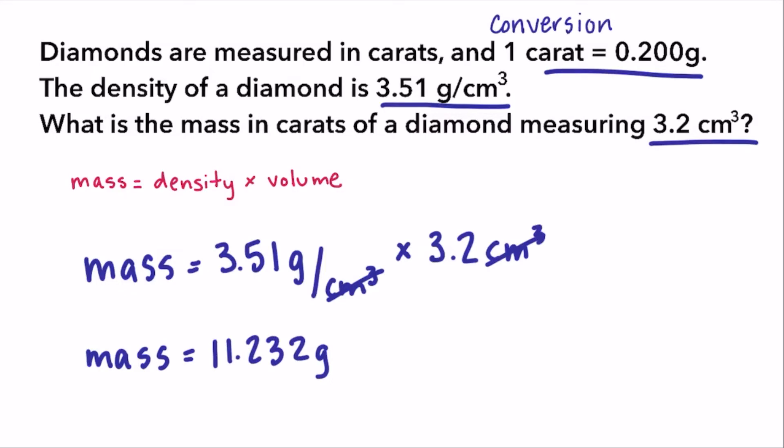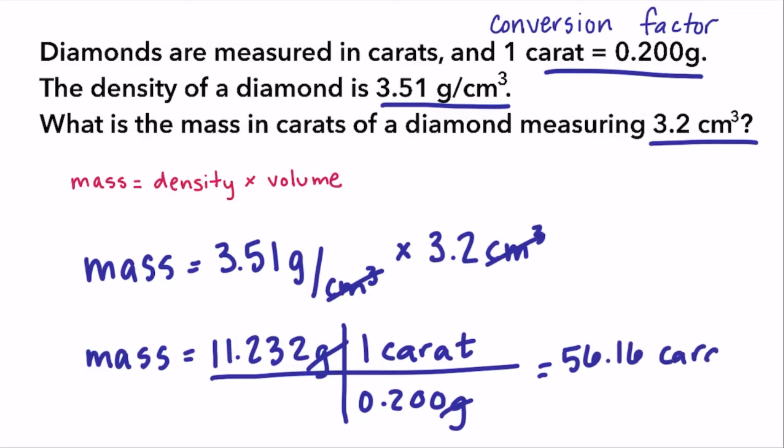3.51 grams per cubic centimeter times 3.2 cubic centimeters gives us a mass of 11.232 grams. Then we multiply by our conversion factor, arranging it so that grams cancels out and we're left with carats. 11.232 grams divided by 0.2 grams equals 56.16 carats. Rounded to two sig figs is 56 carats. Now that's a big diamond.